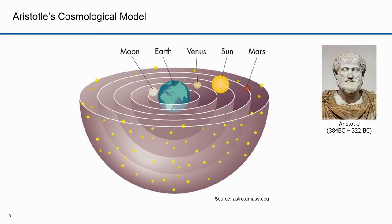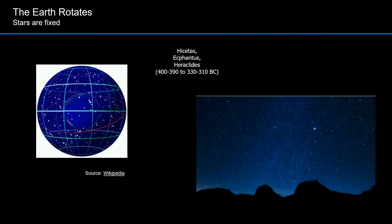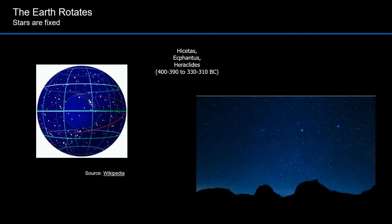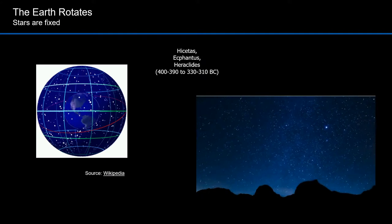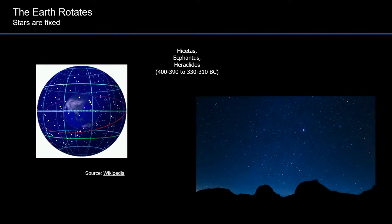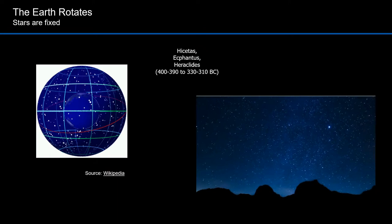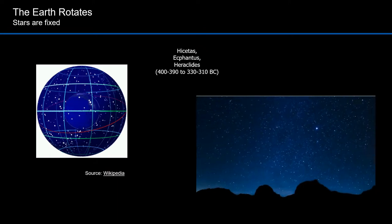I described in part three the cosmological model that Aristotle developed. His theory explained the motion of objects in the universe. In this model the Earth was fixed and everything else moved around it. The Pythagoreans, Hecatus, Hecophantus, and Heraclides proposed that the motion of the stars was apparent, that it was created by rotation of the Earth on an axis. This contradicted Aristotle's model.